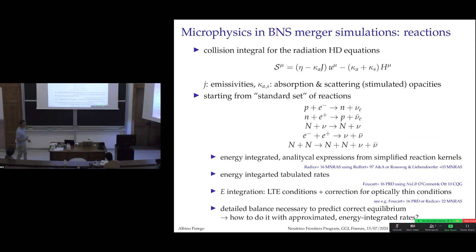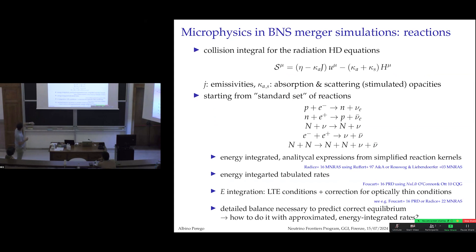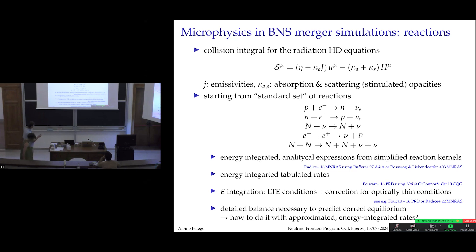Including neutrinos in simulation means modeling the transport, but also the right-hand side — the collision integral. The collision integral involves quantities like N and J, where J is the energy density and H is the flux, along with emissivity and absorptivity for both scattering and absorption, plus opacity. These quantities must be computed based on the reactions you want to include in the simulation.